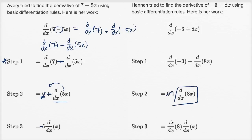And then, let's see. This seems off. She is assuming that the derivative of a product is equal to the product of the derivatives. That is not the case. And especially, if you have a constant here, there's actually a much simpler way of thinking about it - frankly, the way that Avery thought about it.